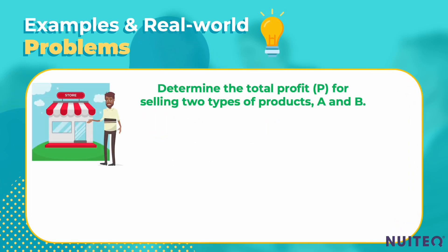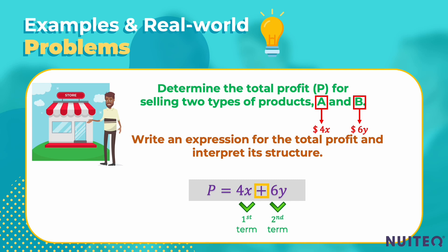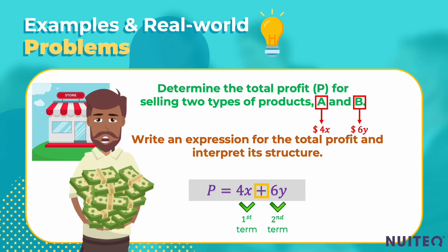Imagine you're working at a store and the manager asks you to determine the total profit P for selling two types of products, A and B. The profit for each product A is 4x dollars, and the profit for each product B is 6y dollars. If the store sells x units of product A and y units of product B, write an expression for the total profit and interpret its structure. The total profit expression would be P = 4x + 6y. The structure shows two terms, 4x and 6y, representing the profit from selling product A and product B respectively. The terms are connected through addition, indicating the total profit is the sum of profits from both products. By understanding the structure, we can see how the number of products sold affects the total profit, which can help the manager make informed decisions about inventory and sales strategies.